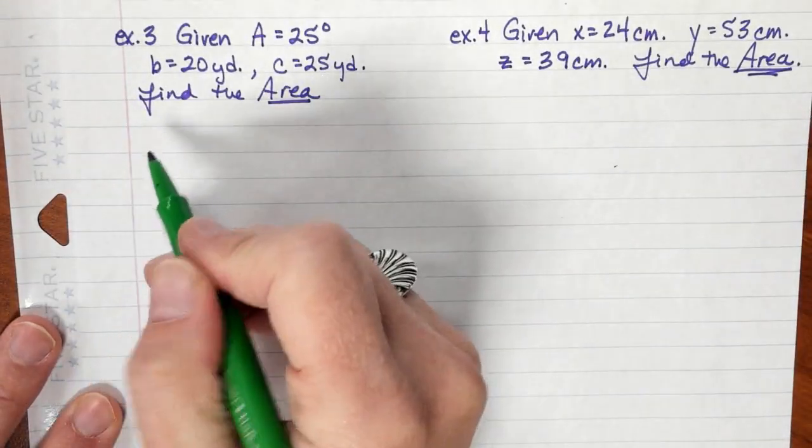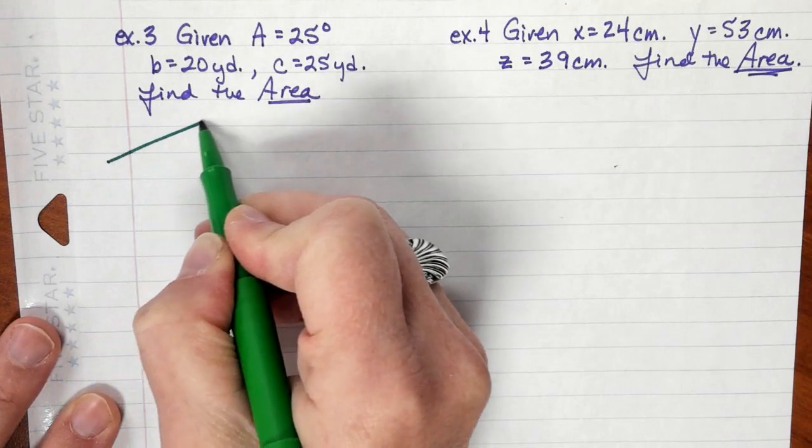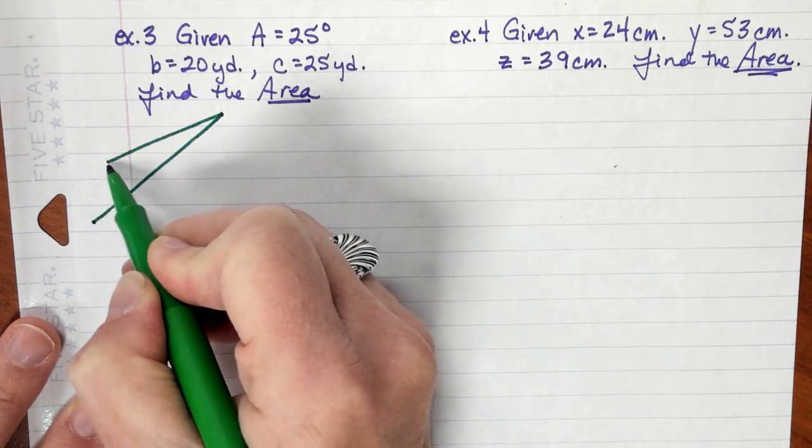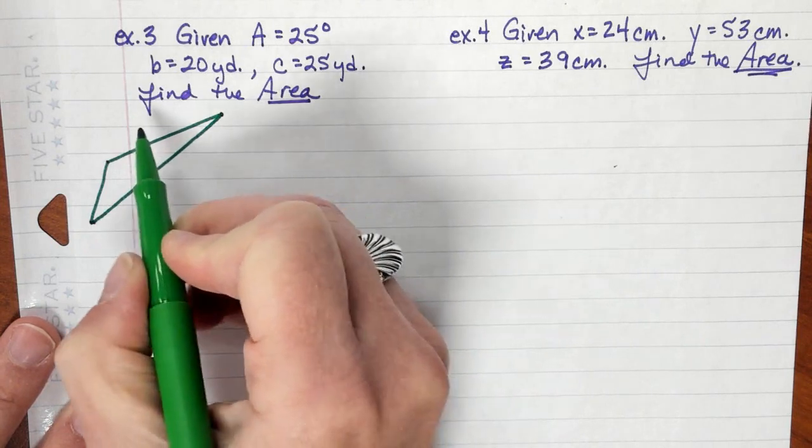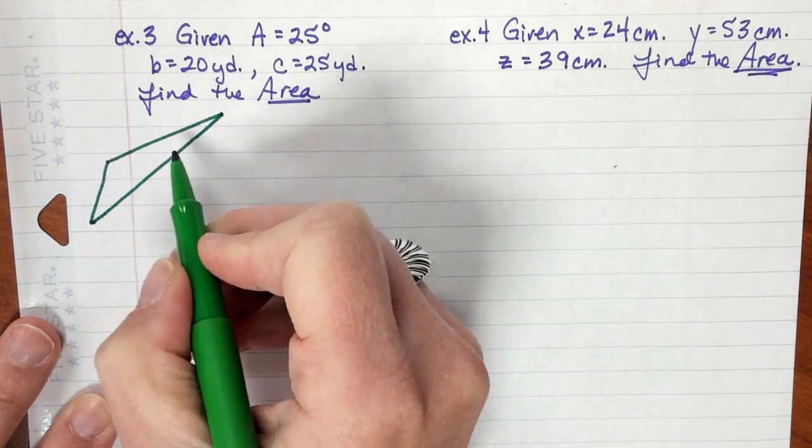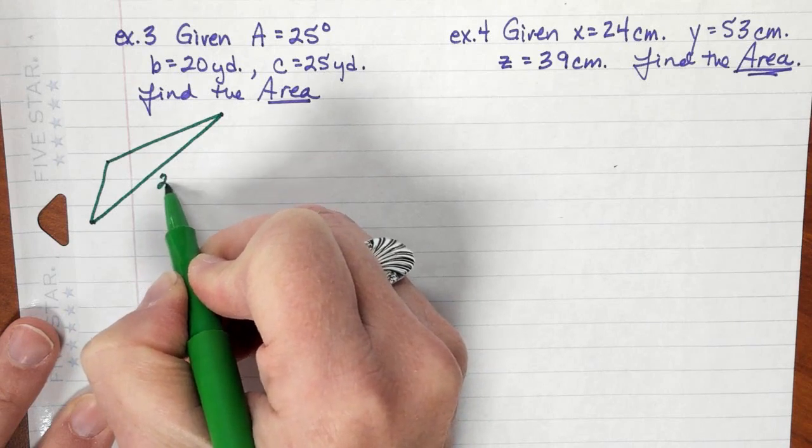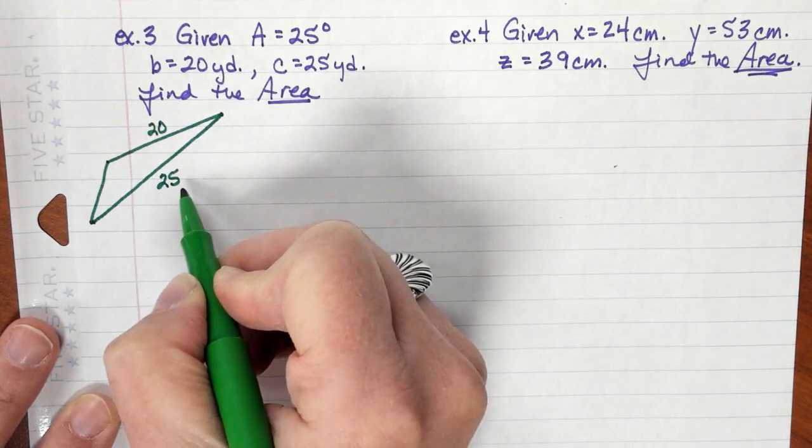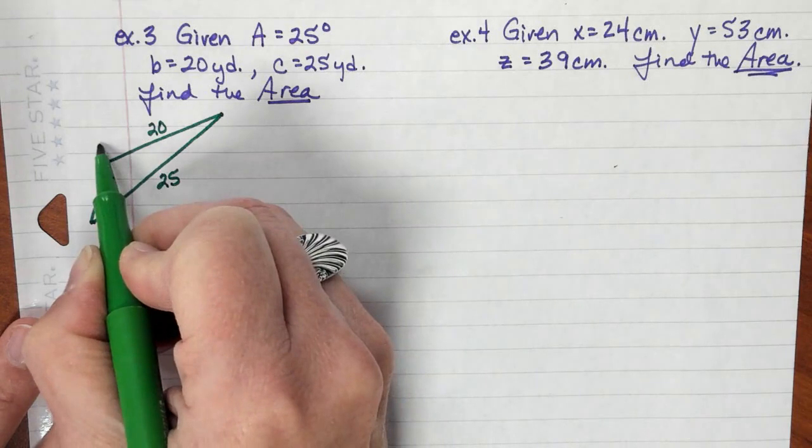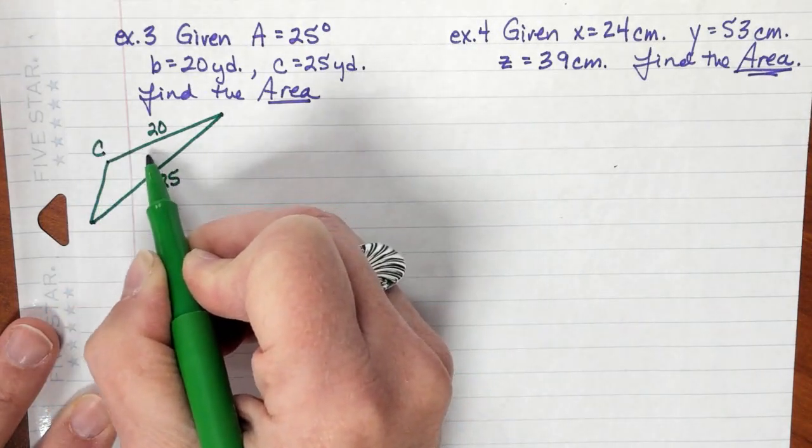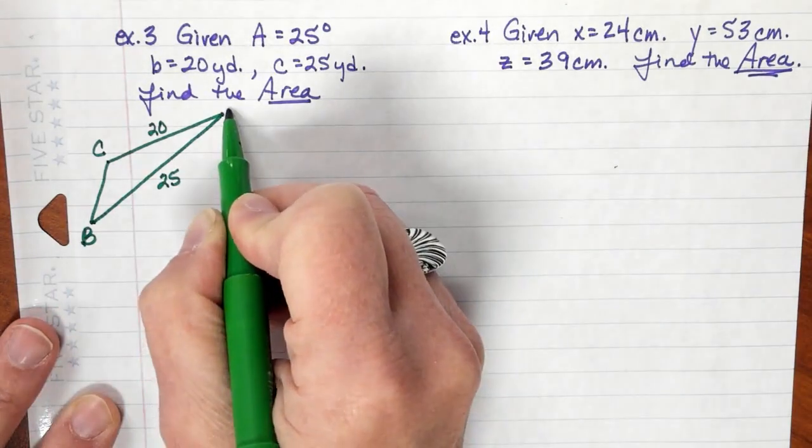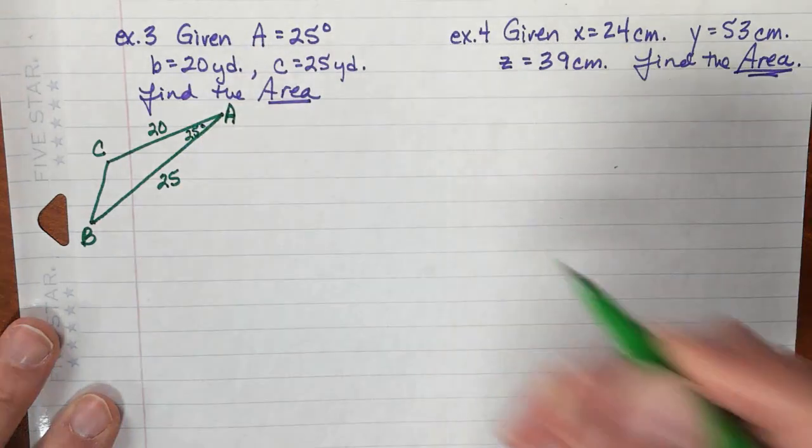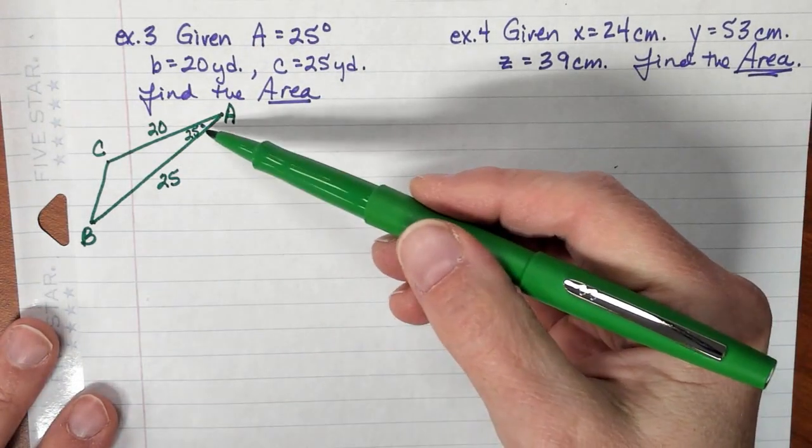So I've got this side's a little longer, this side's even longer. If I make this 25 and this 20, then that makes 25. If this is 25, that makes this angle C. If this is 20, that makes this angle B, and this must be angle A which is 25 degrees.